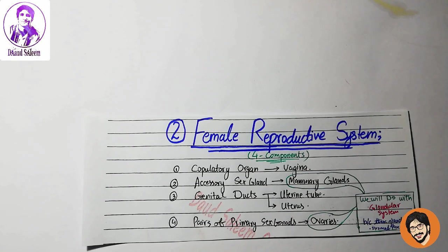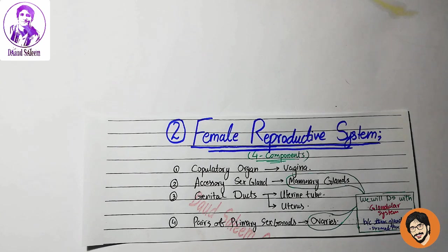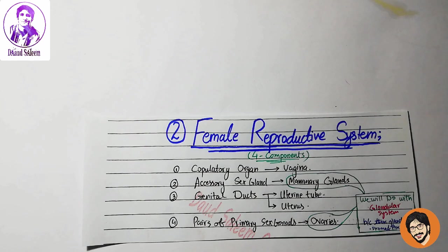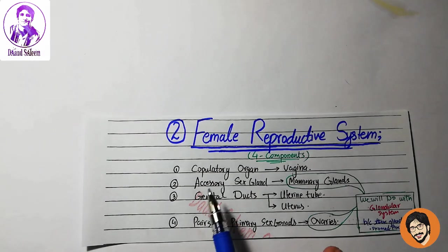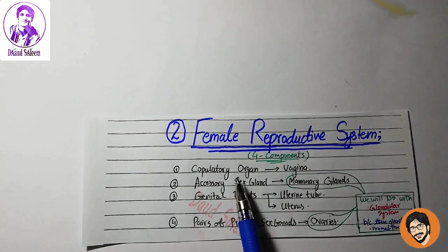Now we're moving towards our female reproductive system, which is tubular. It has epithelium, mucosa, submucosa, lamina propria, muscularis, and adventitia. It is tubular, which is a copulatory organ — the vagina.